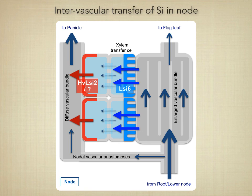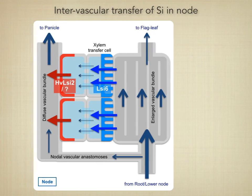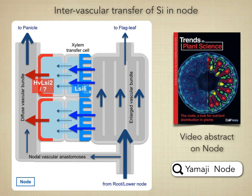In barley, in addition to LSI-6, HvLSI-2 was also identified in the node. It is localized at the parenchyma cell layer next to the xylem transfer cells with opposite polarity to HvLSI-6. Therefore, a co-operated transport system is also required in the node for silicon distribution. For more detail about the mineral element distribution in nodes, please watch our other video abstract on nodes.